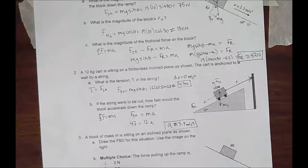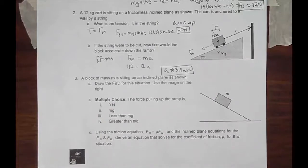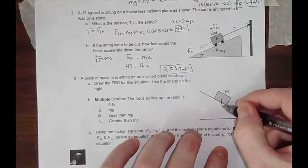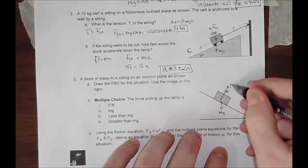And for the last one, a block of mass m sitting on an incline plane as shown. Draw an FBD or a free body diagram for the situation. Use the image on the right. Now obviously, we always have a mass times gravity pulling down. And there is a normal force here.